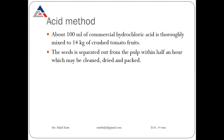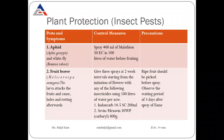In the acid method, commercial hydrochloric acid is used at the rate of 100 ml mixed with 14 kg of crushed tomato fruits. These seeds are separated from the pulp within half an hour and then cleaned, dried, and packed. So these are the two methods: fermentation method and acid method.